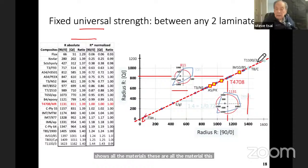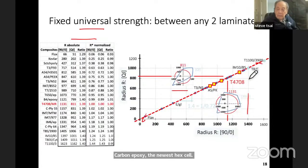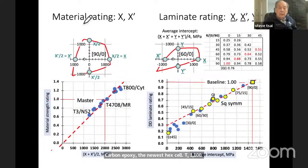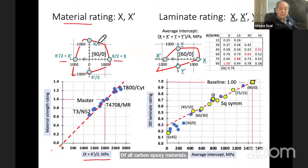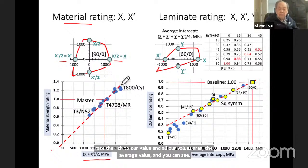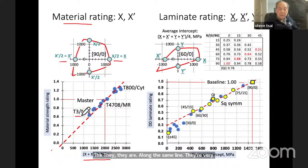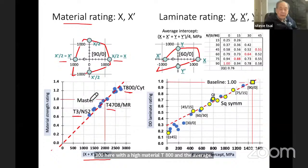The material rating is related to X (uniaxial tension) and X prime (uniaxial compression). We take the average of uniaxial tension and uniaxial compression for all carbon epoxy materials and plot it against the R value. You can see they are along the same line, very accurate, with the low material T300 at one end and the high material T800 at the other. The average material is T4708, which we call the master — from which you can scale all the others.